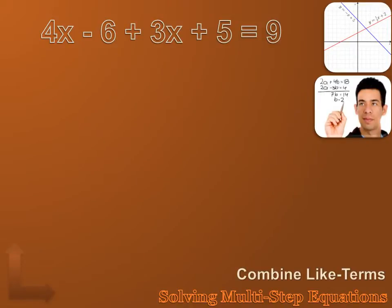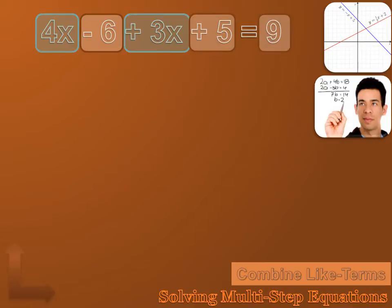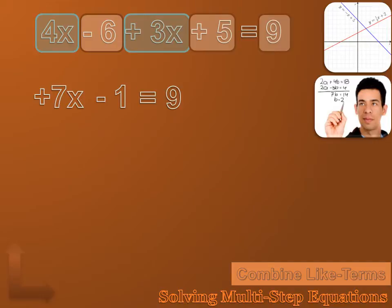4x minus 6 plus 3x plus 5 equals 9. I want to solve this for x — simplify this equation so completely that it reads x equals something. Combining like terms is one of the most powerful ways to simplify an equation. I've got a 4x and a plus 3x. I've got some constant number terms too: a minus 6, a plus 5, and a plus 9. I can combine 4x and 3x, both on the left side of the equation, and get positive 7x. Then I can combine the constant terms on the left side and get minus 1. That equals 9, so I've simplified to 7x minus 1 equals 9.